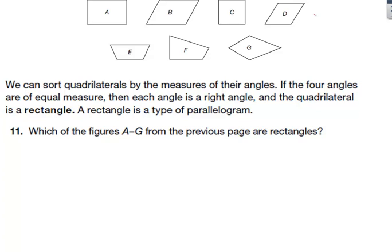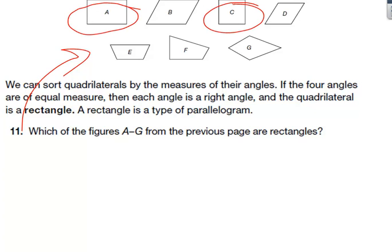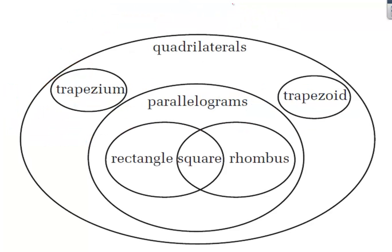We can also sort quadrilaterals by measuring their angles. If the four angles are of equal measure, then each angle is a right angle and the quadrilateral is a rectangle. A rectangle is a type of parallelogram. Which of the figures up here are rectangles? It would be A, obviously, and also C — C would also be a rectangle, even though we call it a square.